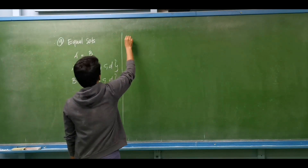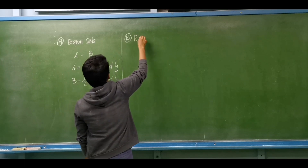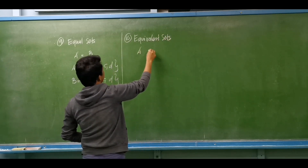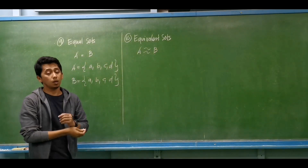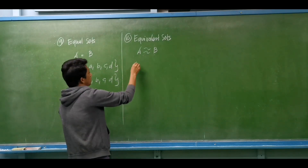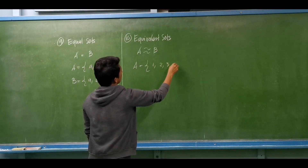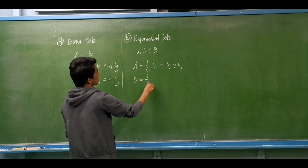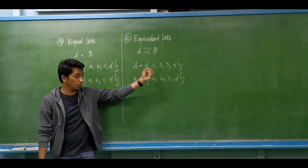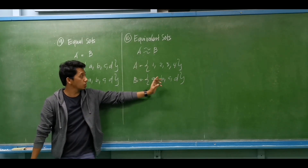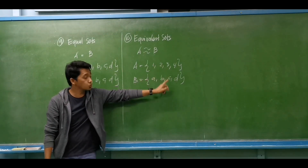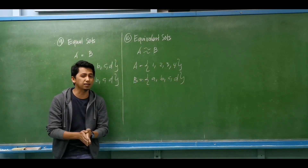Number ten: we have equivalent sets. Set A is equivalent to set B — we have the same number of cardinality, but we don't have the same elements. For example, set A with elements 1, 2, 3, and 4. Then set B with elements A, B, C, and D. Same cardinality — four elements each — but we don't have similar elements. One-to-one correspondence: 1 is to A, 2 is to B, 3 is to C, and 4 is to D. These are the types of sets.